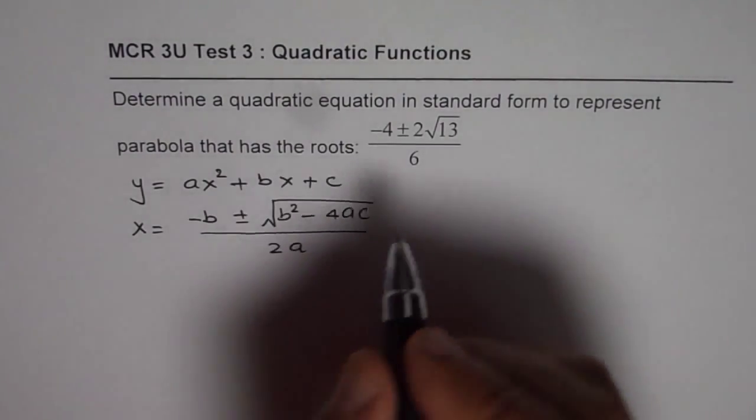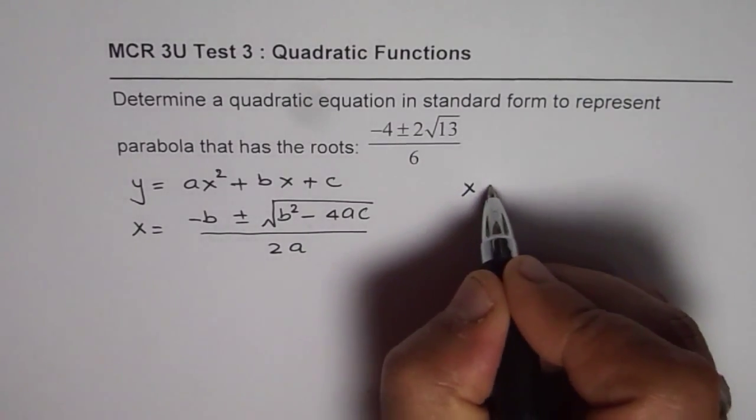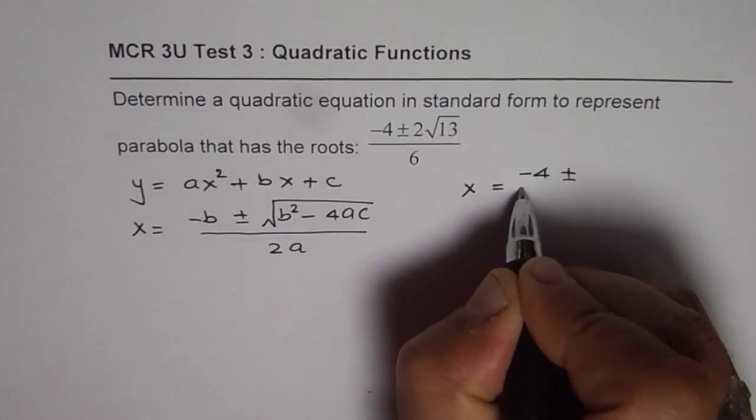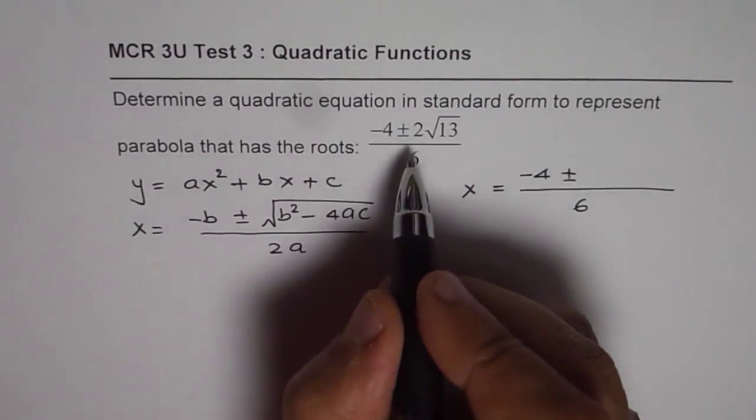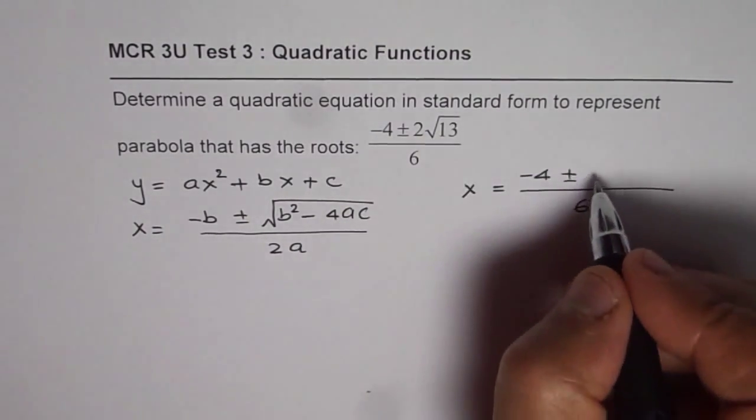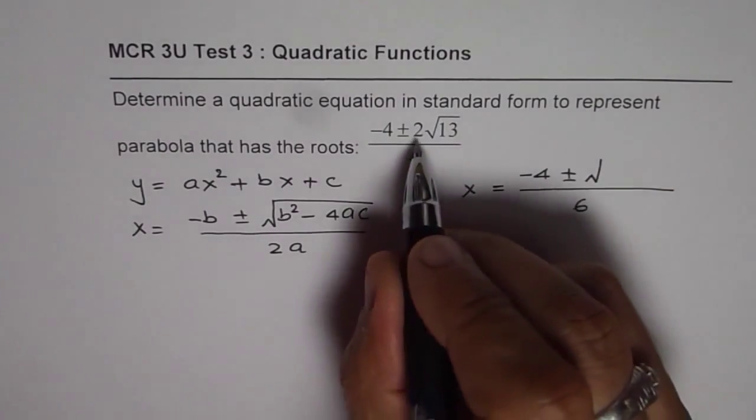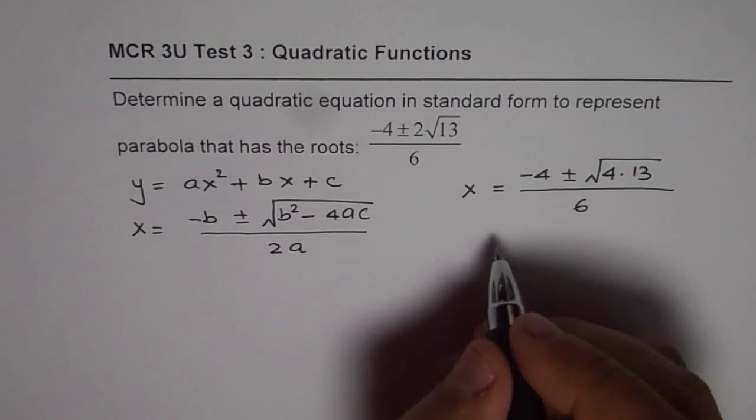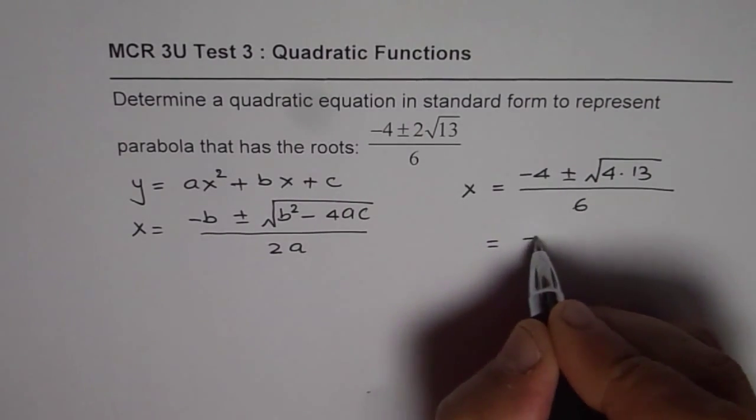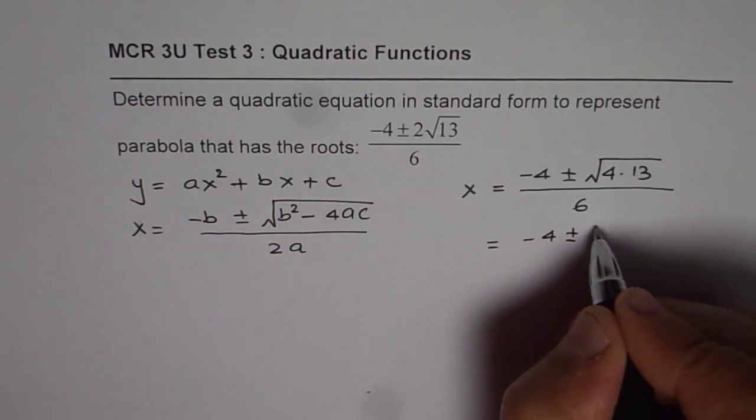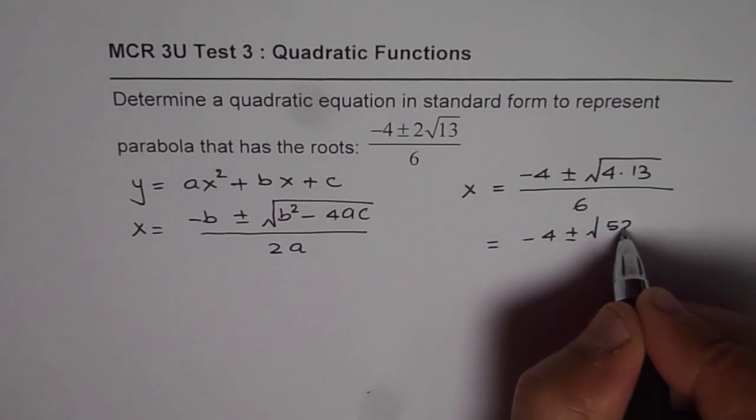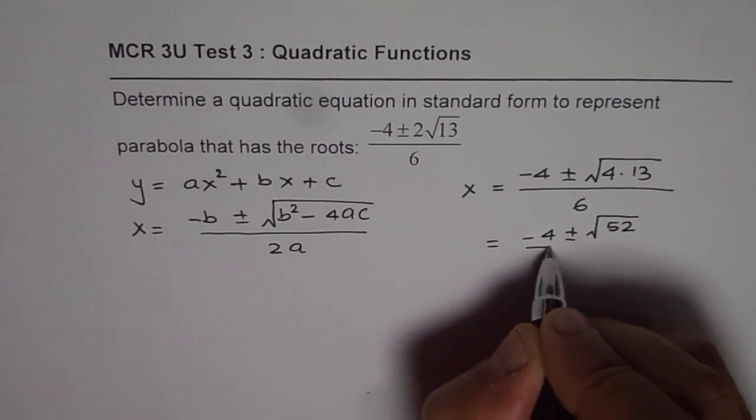What we are given here is x equals minus 4 plus and minus. Now it is 2 outside within square root. When I take 2 inside, it becomes 4. I could write this as minus 4 plus and minus square root of 4 times 13 is 52 over 6.